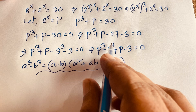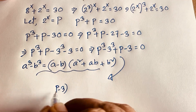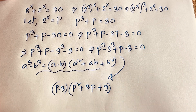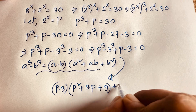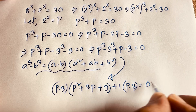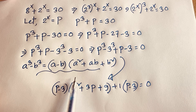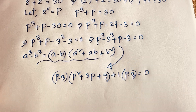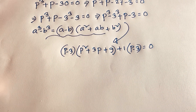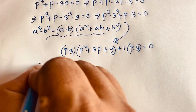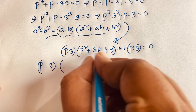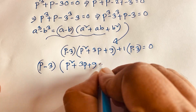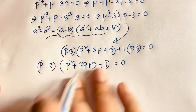Applying this identity, p³ − 3³ becomes (p − 3)(p² + 3p + 9). And there is 1 common in the remaining term (p − 3). So factoring out (p − 3), this equation becomes (p − 3)(p² + 3p + 9 + 1) = 0, which is (p − 3)(p² + 3p + 10) = 0.